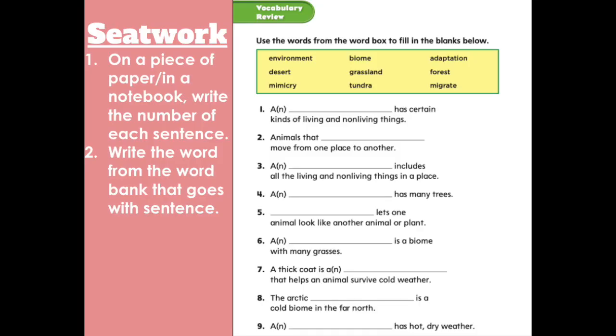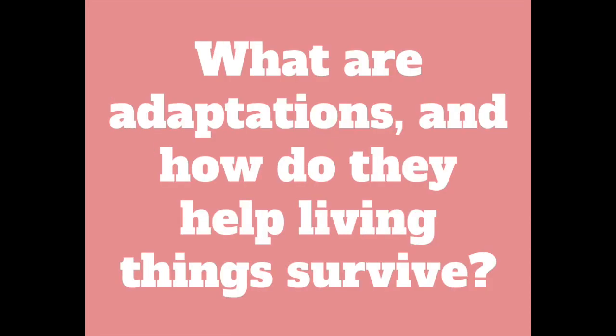On to our seat work for today. On a piece of paper or in your notebook, write the number of each sentence. Then write the word from the word bank that goes with the sentence. To finish up this week, I want you to tell me what you know — you're going to be answering the question: what are adaptations and how do they help living things survive? You're going to be writing a paragraph. Don't forget paragraphs have an introduction, a body, and a conclusion. See you on Monday. Have a great weekend!